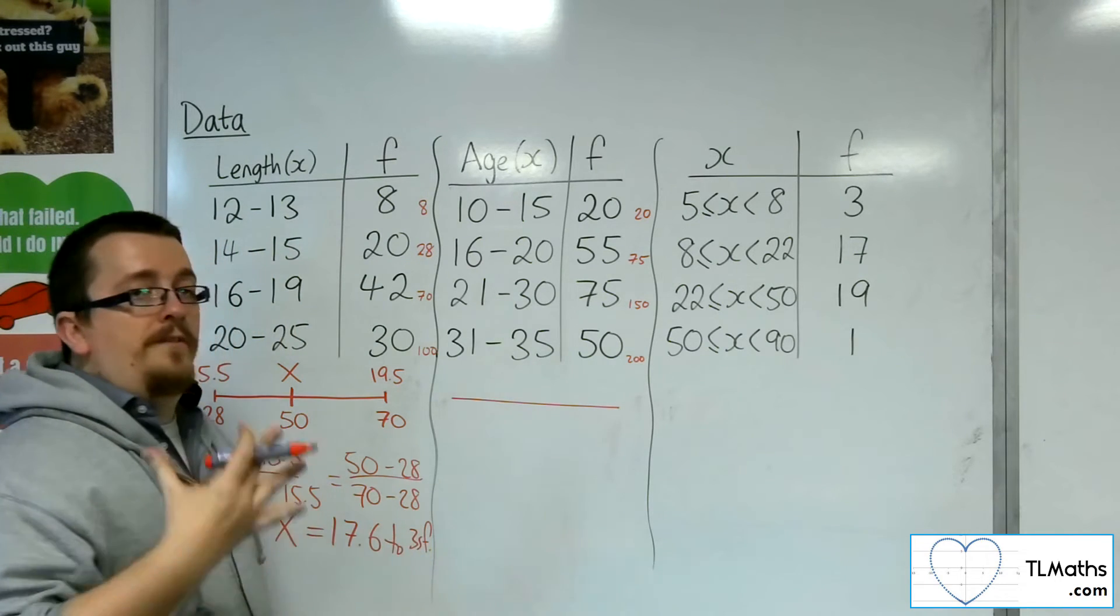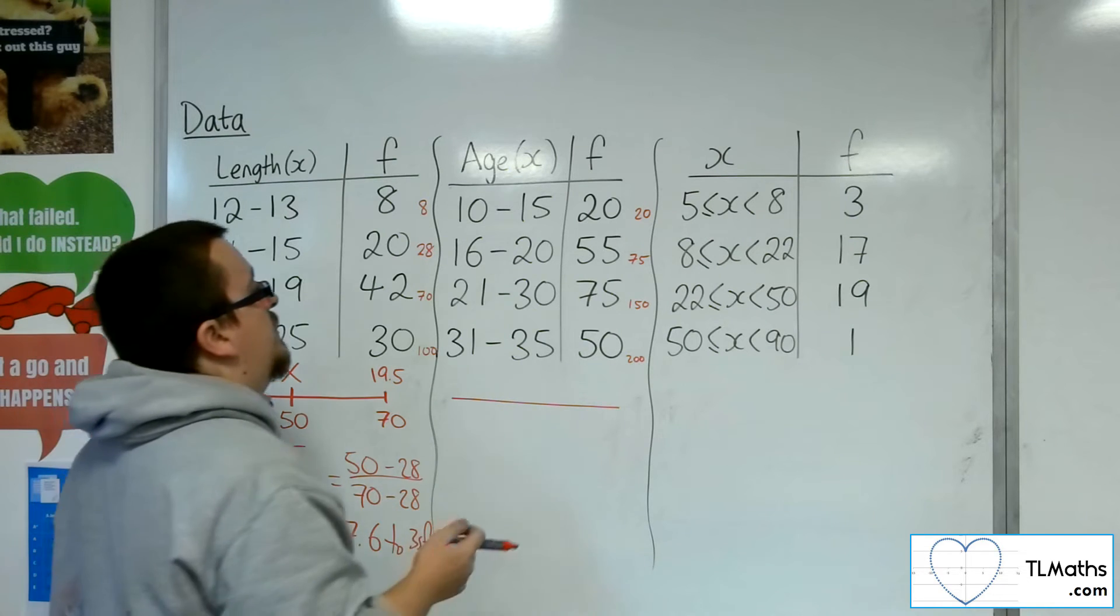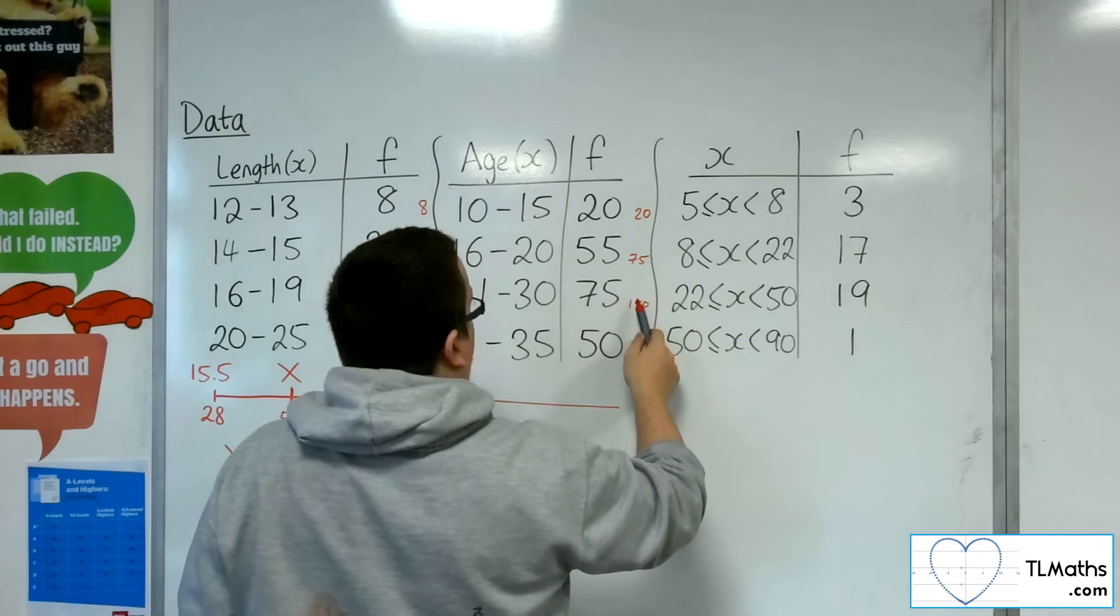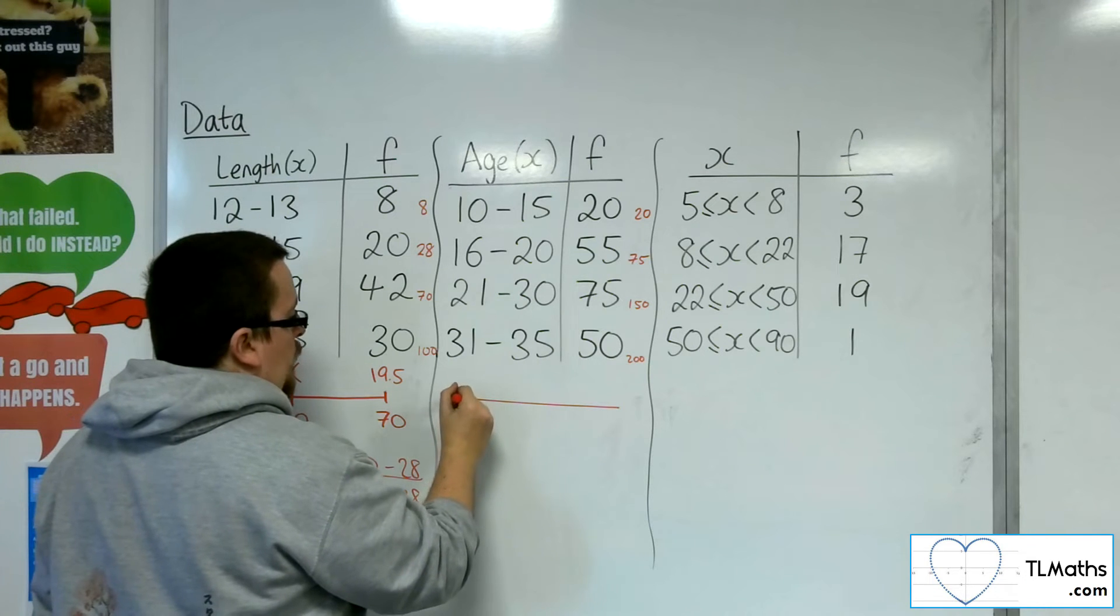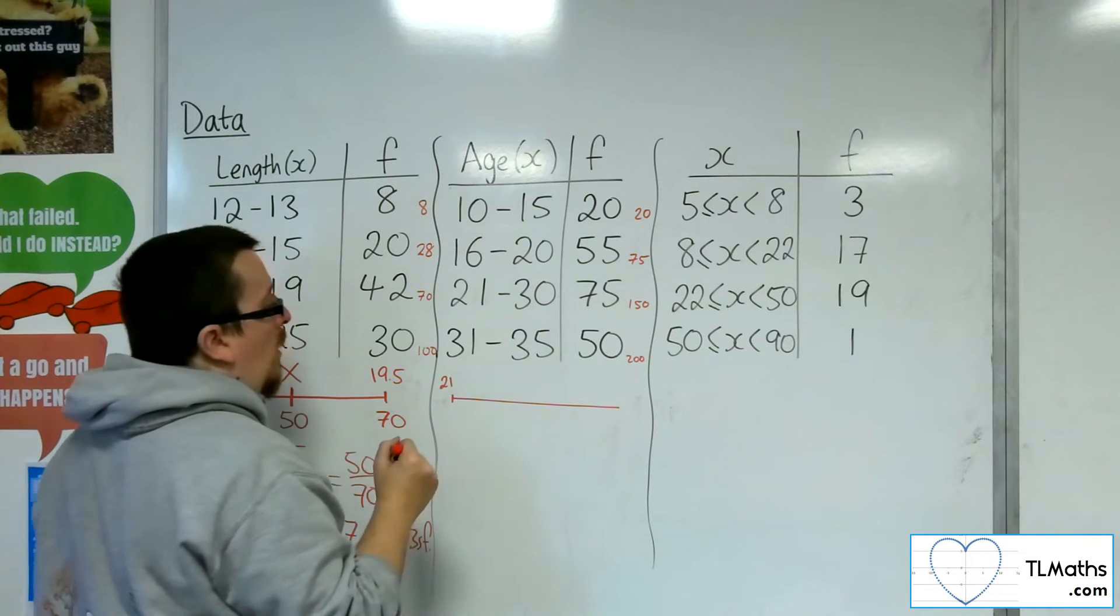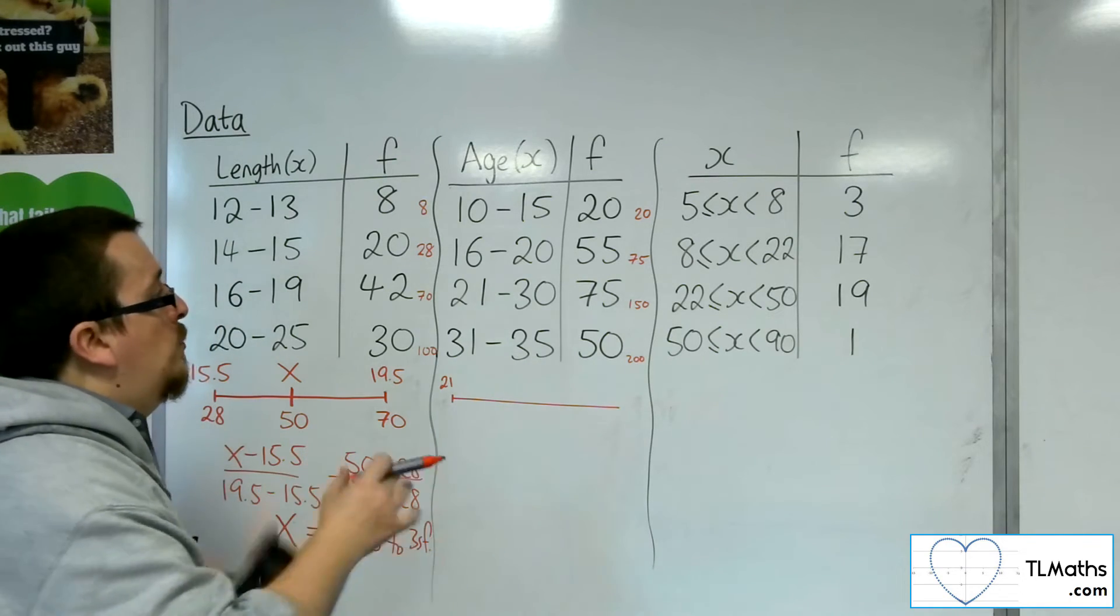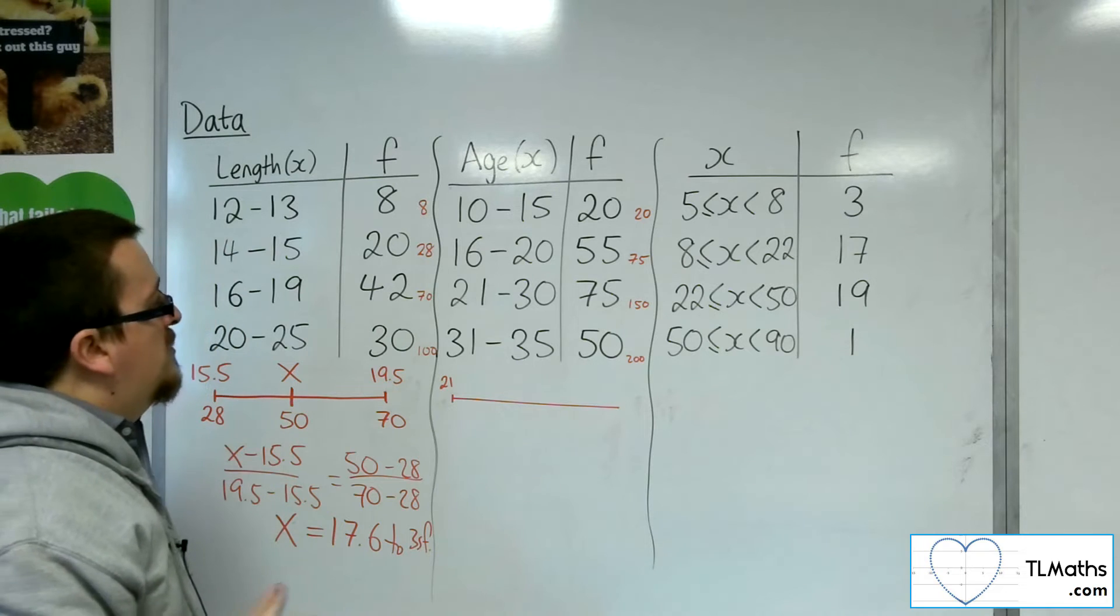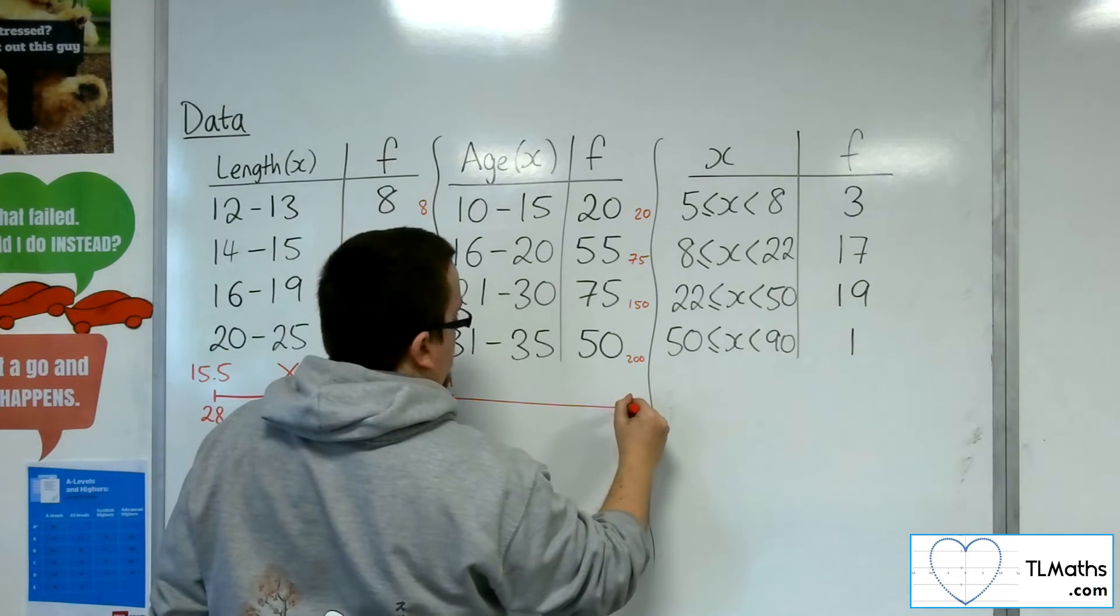So 200 divided by 2 is 100. So I'm looking for the 100th data point. I've gone through 75 there, so it will be inside 21 to 30. So this would be going from 21, because 20.5 would be considered 20. So we're going from 21 all the way up to 31.